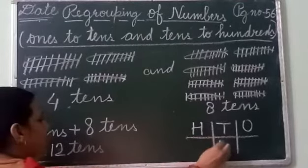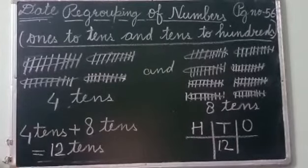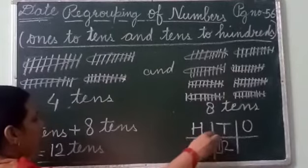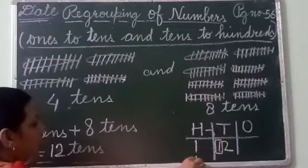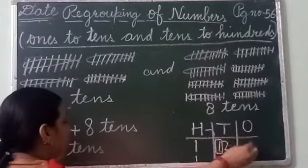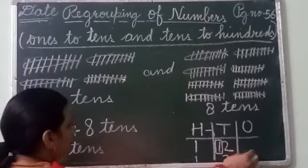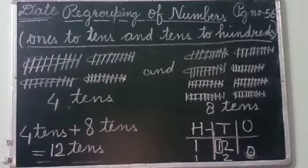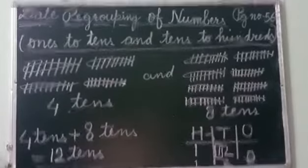Now you have 12 tens. You can see it is placed by the chart. If you write 12 tens, that is not allowed — you can't write 12 in the tens column. So this one will go to the hundreds place, and it will be 1 hundred and 2 tens. There is nothing in the ones place, so zero is in the ones place. You will get the number 120.